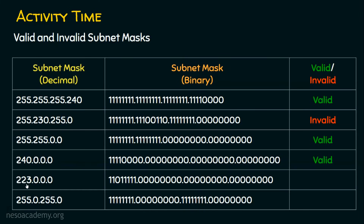For 223.0.0.0, the binary conversion shows consecutive ones followed by a zero, but then another one appears — making it invalid. Finally, 255.0.255.0 converts to ones, then zeros, then ones again — an interruption in the pattern — so this is also an invalid subnet mask.